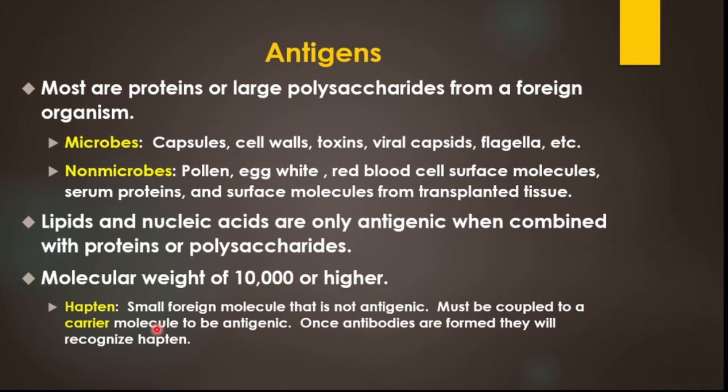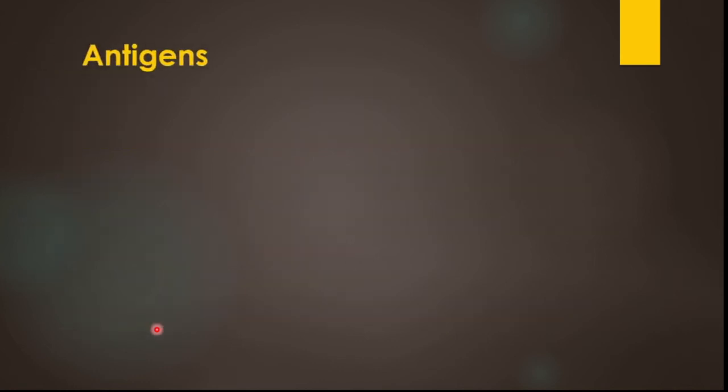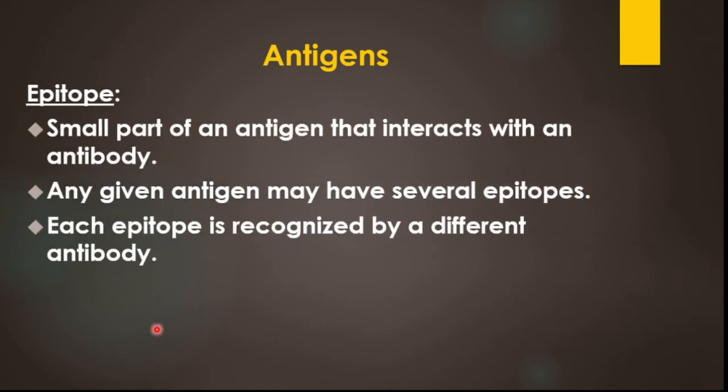For example, if we have used an ointment or cream, the cream is a hapten — a foreign particle we are applying externally. When it combines with our skin proteins, it becomes an active component, and the body will start to create antibodies against it. We call such molecules haptens.